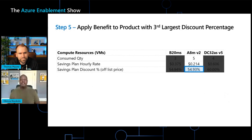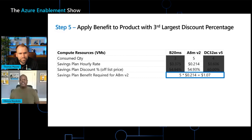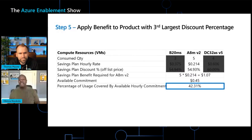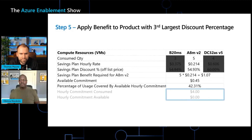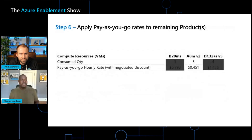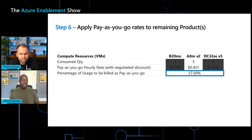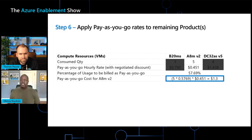We've covered two products and have $0.45 left. The last product has a 54.93% discount. Based on the quantity and price, we would need $1.07 to fully cover it, but we only have $0.45 available. That means we're covering approximately 42% of the usage for that hour. At that point, we've fully consumed the $4 commitment — there's no money left over. The remaining 57% of usage for that last product is billed at pay-as-you-go rates, which works out to approximately $1.30 (57% of five units multiplied by the price).